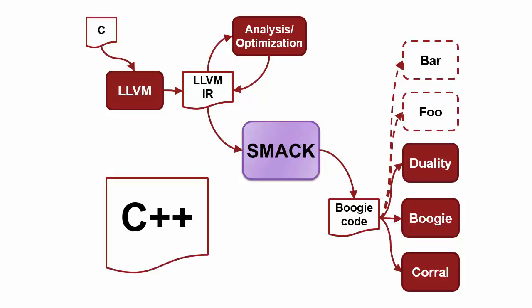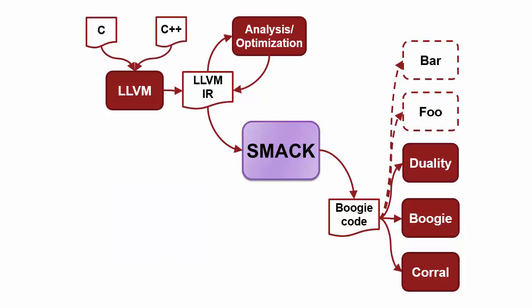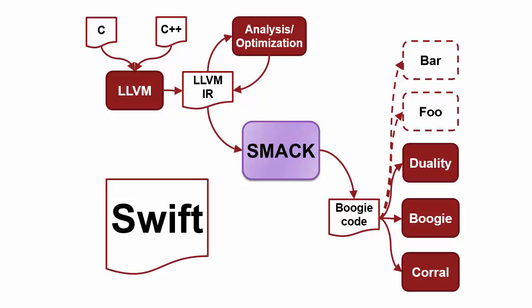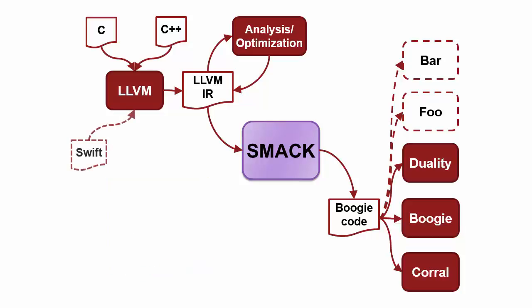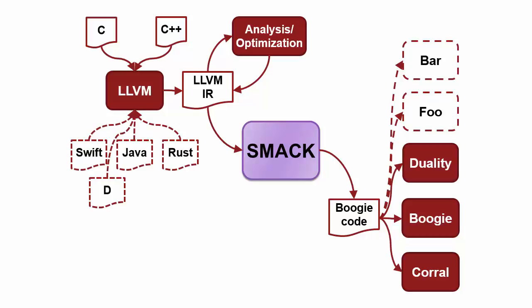Initial development focused on C. However, basic C++ programs also work well with SMAC. Support for these languages is facilitated by LLVM's C and C++ front-end, Clang. We are currently working on adding support for additional languages that can be compiled to LLVM-IR, such as Swift, Java, Rust, and others.